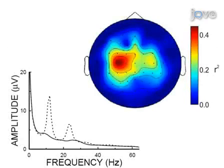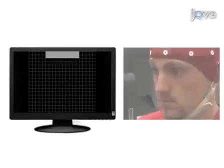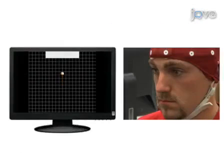As a result of the calibration procedure, the R-squared values and scalp tomography can be used to determine which electrodes and frequency bins will be used to guide a cursor on the computer screen. Subjects will then be able to move a cursor quickly to target areas just by thinking about it.